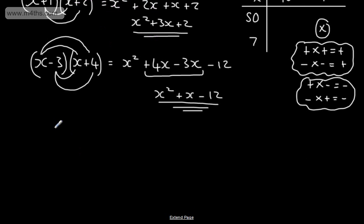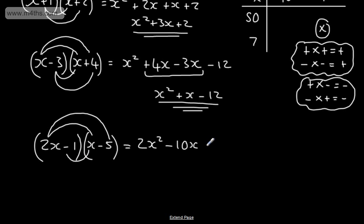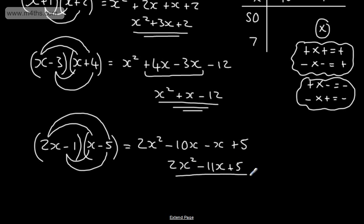Let's do (2x−1)(x−5). 2x times x = 2x squared. 2x times 5 = 10x, positive times negative = minus 10x. Minus 1 times x = minus x. Minus 1 times minus 5: negative times negative = positive, so plus 5. Collecting: 2x squared minus 10x minus x plus 5 = 2x squared minus 11x plus 5. Expanded and simplified.